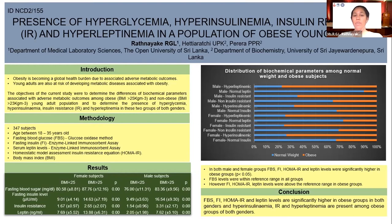As results, we can highlight three points. In both male and female groups, fasting blood glucose, fasting insulin, HOMA-IR, and leptin levels are significantly higher in the obese group. Fasting blood glucose levels are within the reference range in all groups, while fasting insulin, HOMA-IR, and leptin levels are above the reference range in the obese groups.